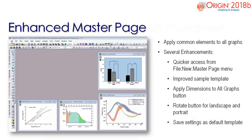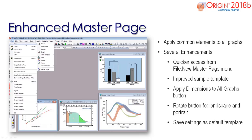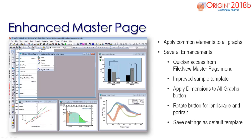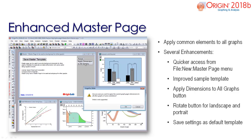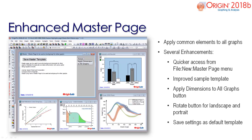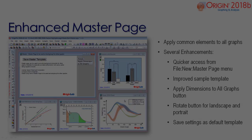To open the master page, simply select the file menu tab. To save the new settings as your default template, use the save master template button. With your template, you can select apply dimensions to all graphs to apply the same dimensions to all graphs in your project. The rotate button allows you to switch between landscape and portrait mode.